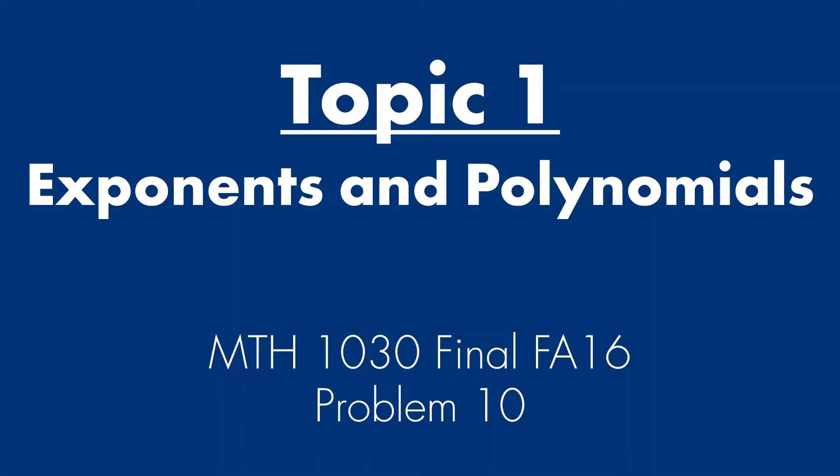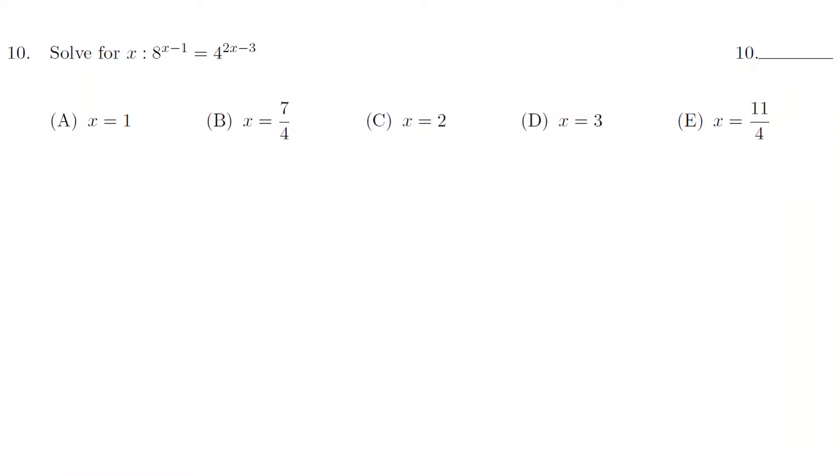The first topic is exponents and polynomials. It's going to come from MTH 1030 final FA 16 problem 10. Here we have 8 to the power of x minus 1 equal 4 to the power of 2x minus 3. In these problems, the key is to figure out what is that specific common base.